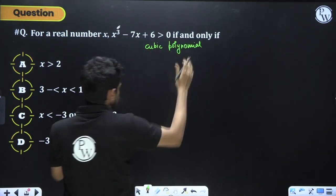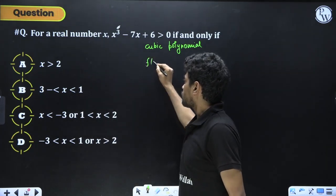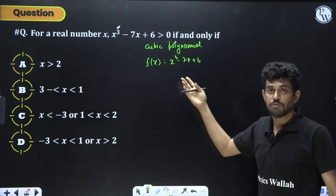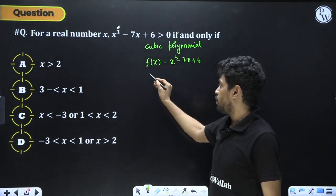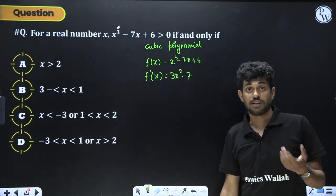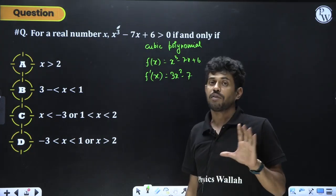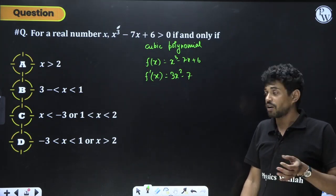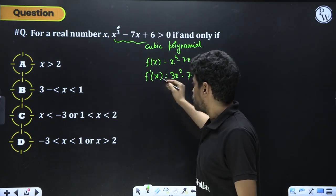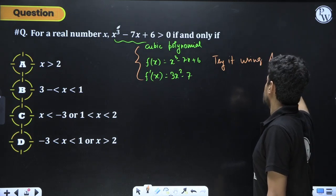You can solve it algebraically, or you can also use calculus. If you take f(x) = x³ - 7x + 6, this is a polynomial function — hence continuous and derivable for all x ∈ ℝ. From here you can find f'(x) = 3x² - 7, and then find where f'(x) > 0 and < 0 to find extremum values and draw a graph. But that is a lengthy approach.